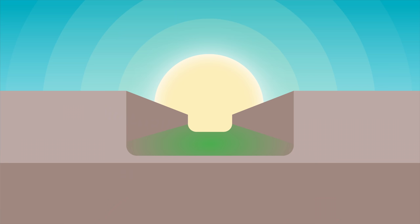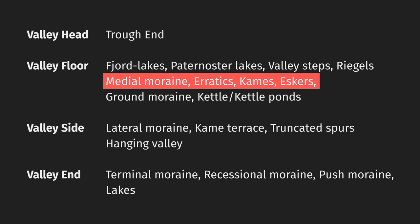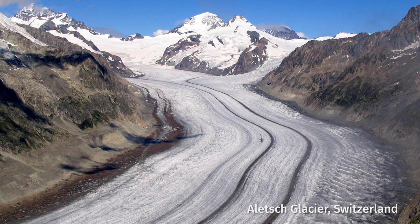If a step spans the entire valley floor, it's called a riegel. Riegels may impound lakes, and depending on their height, may have rapids or waterfalls cascading over them. Medial moraines, erratics, kames and eskers may also be present on the valley floor.